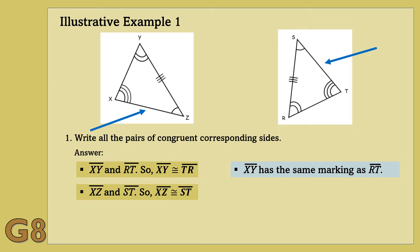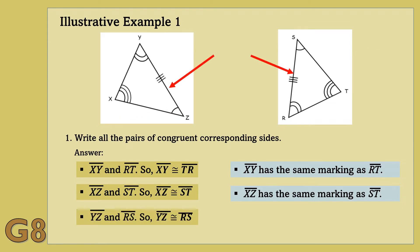Another pair of congruent corresponding sides are line segment XZ and line segment ST. So, line segment XZ is congruent to line segment ST. Why? Because line segment XZ has the same markings as line segment ST. Line segment YZ is congruent to line segment RS, because line segment YZ has the same markings as line segment RS. Great! Congratulations, students!